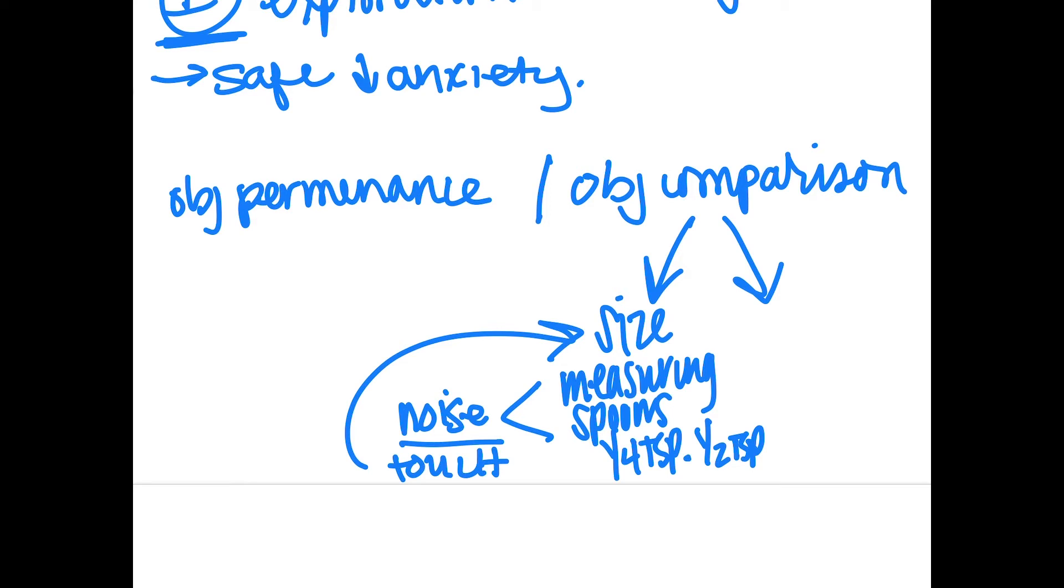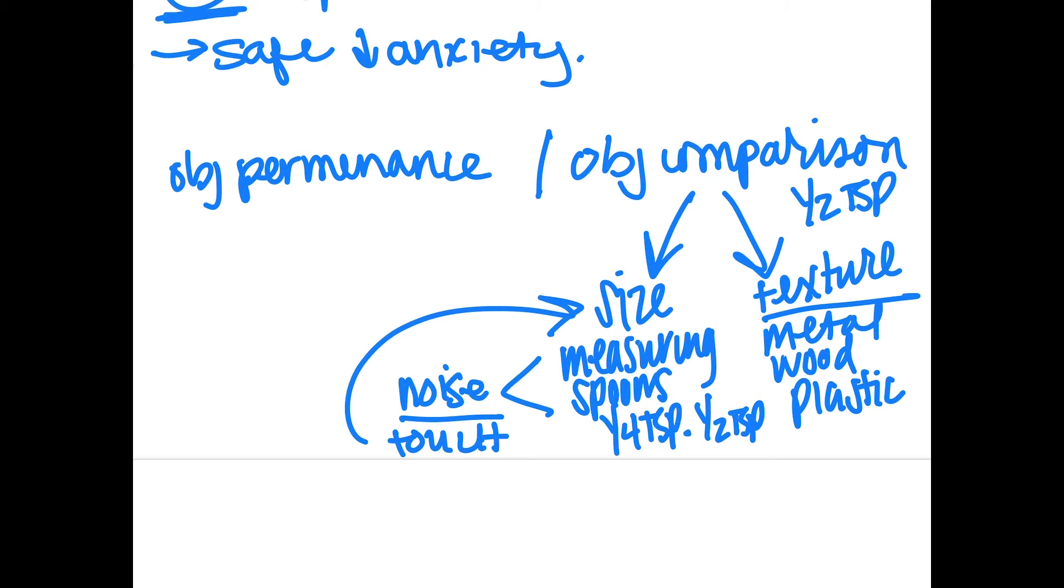Object comparison in a different aspect, so not just size, you could have texture. So you might have like the same half teaspoon, but you might have it in metal and wood and plastic. So the metal is going to be colder than maybe the wood would be. The wood's going to have a different grain, or it's not going to be quite as smooth as the plastic. So the kiddo is starting to realize like, okay, this is the same size, but it can be different based on how it feels.